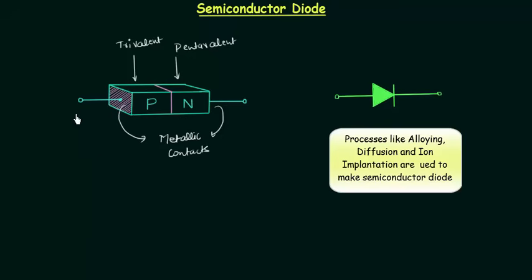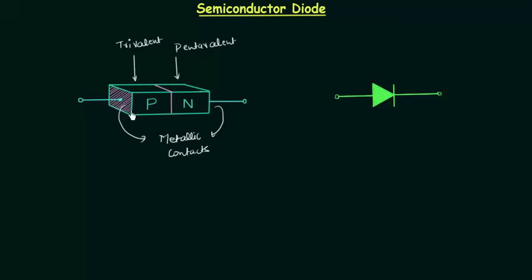We can apply external voltage across these two terminals, and depending upon this we have three cases: no bias condition, in which we do not apply any external voltage; forward bias condition, in which the P side is connected to the positive terminal of the battery and the N side is connected to the negative terminal; and reverse bias condition, in which the negative terminal of the battery is connected to the P side and the positive terminal is connected to the N side.